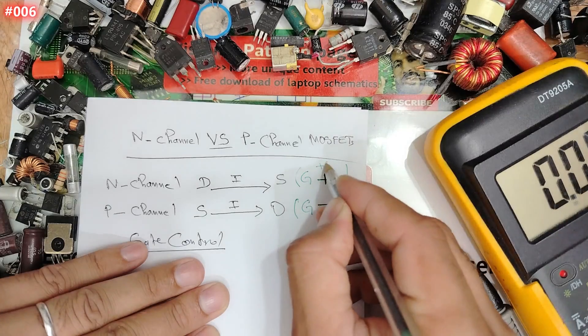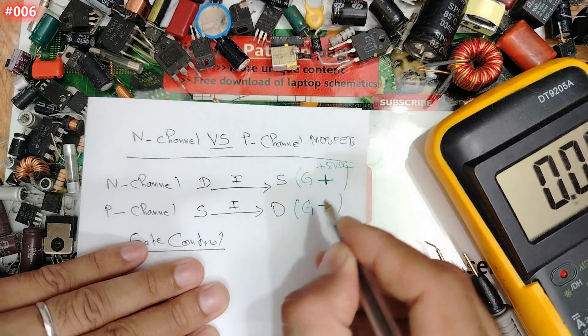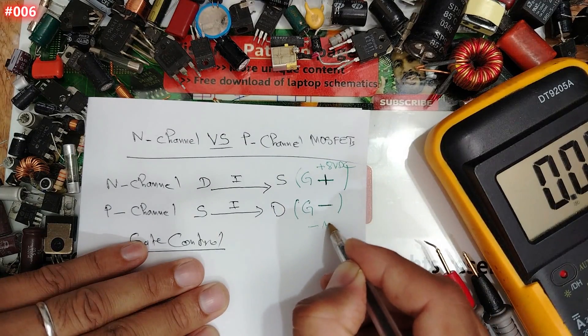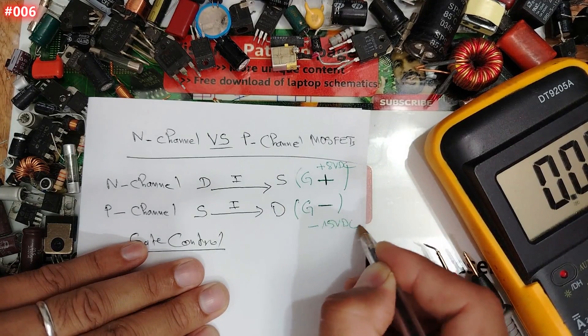For example, plus 8 volt DC. Here, for example, minus 15 volt DC. Guys, I will give you right now a real example.